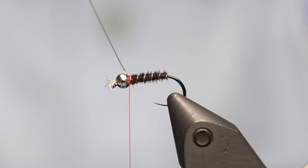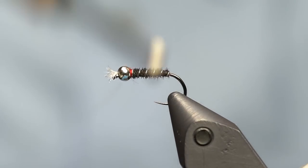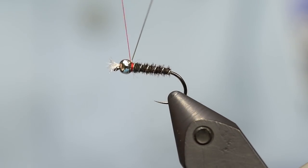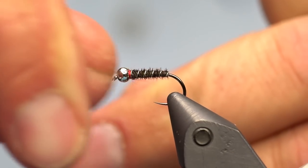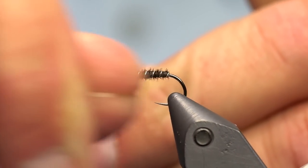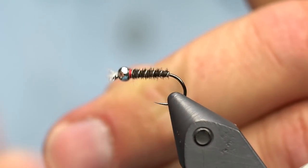Then just wiggle it back and forth till it breaks off. That makes it so it doesn't have a sharp point and also has less bulk.